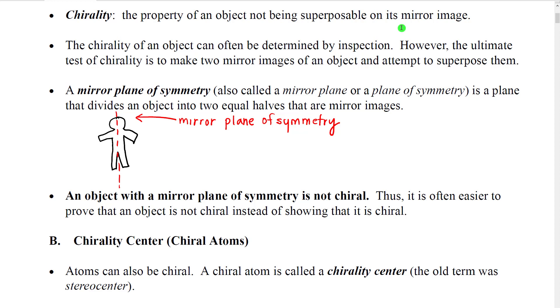In biological systems, this is often called a plane of bilateral symmetry. An object that has a mirror plane of symmetry is not chiral. Therefore it's often easier to prove that an object is not chiral instead of proving that it is chiral.